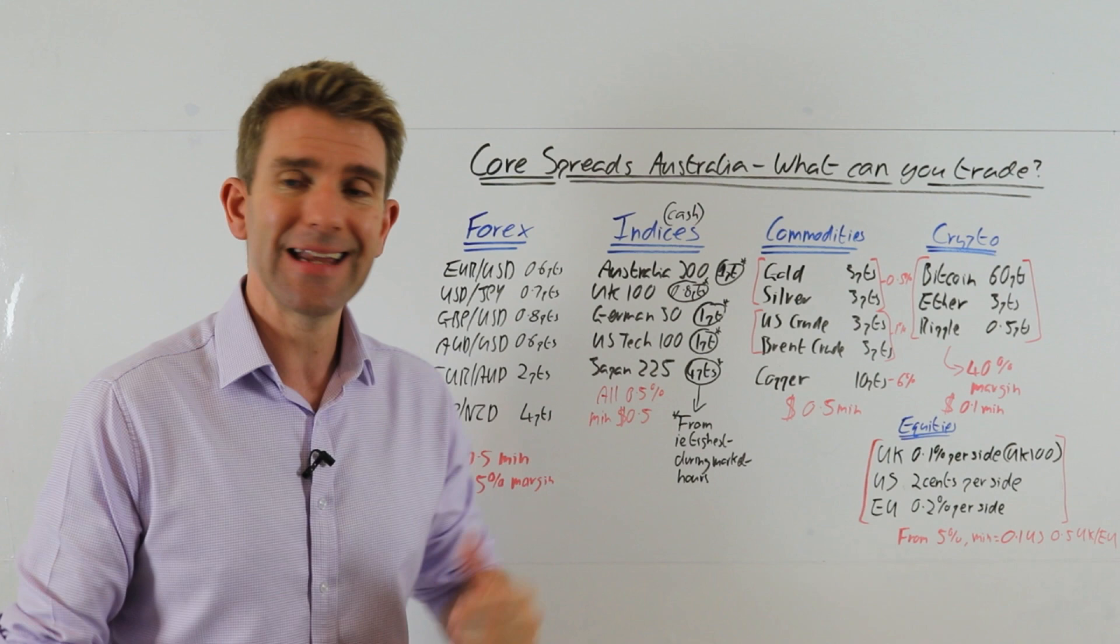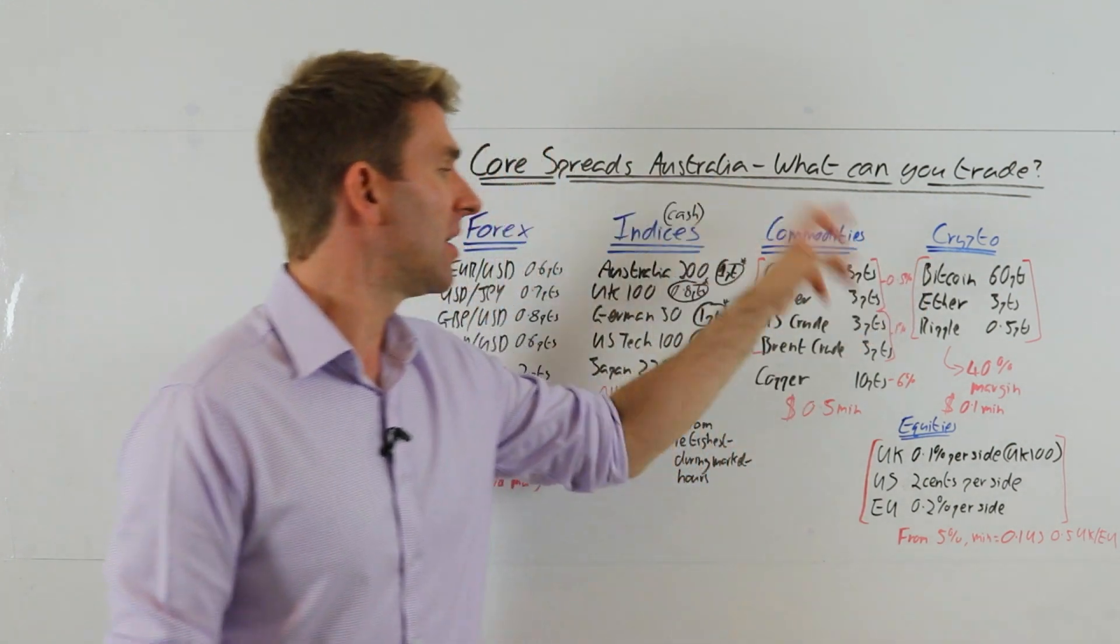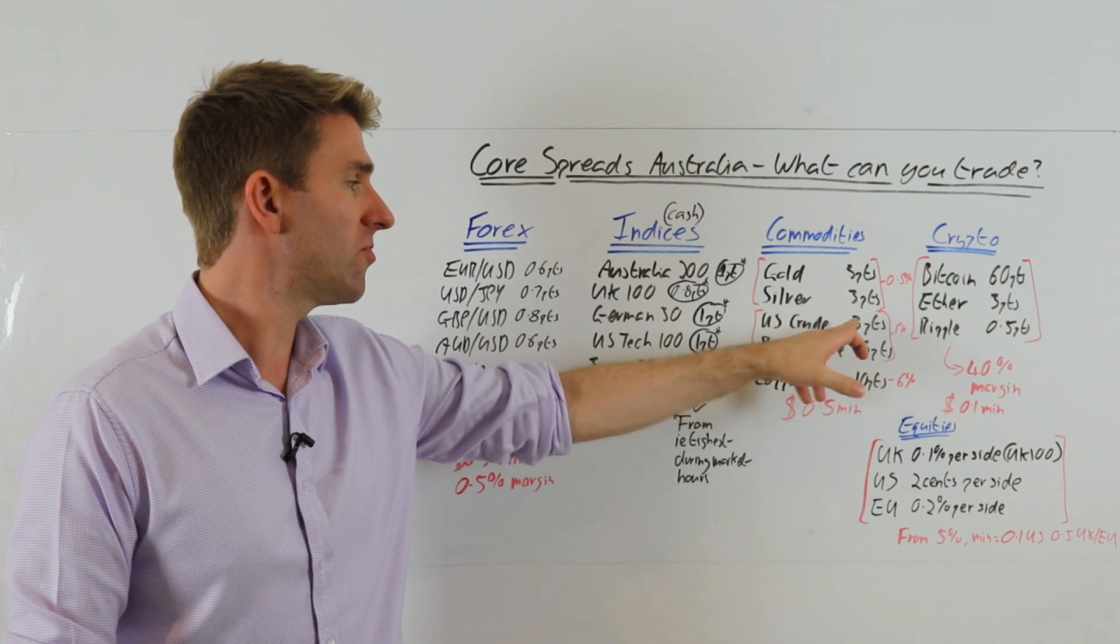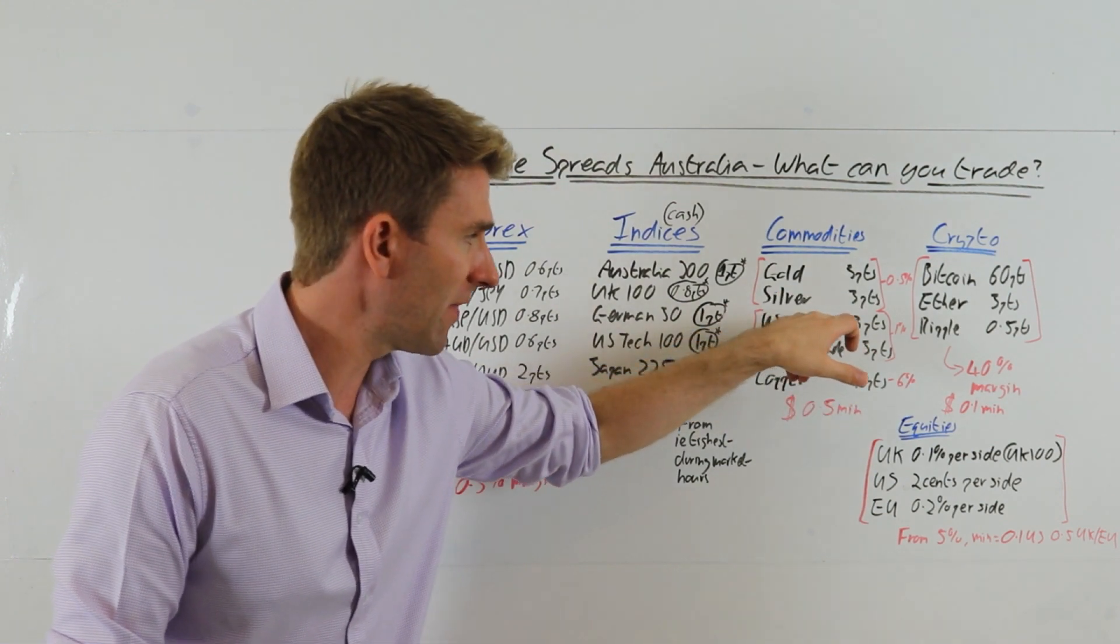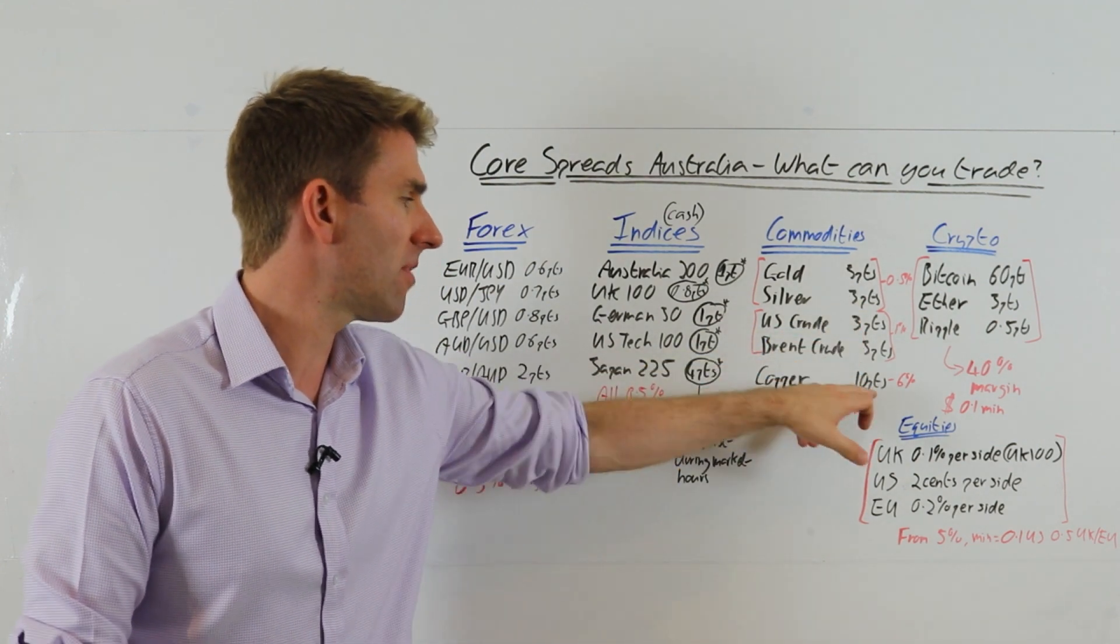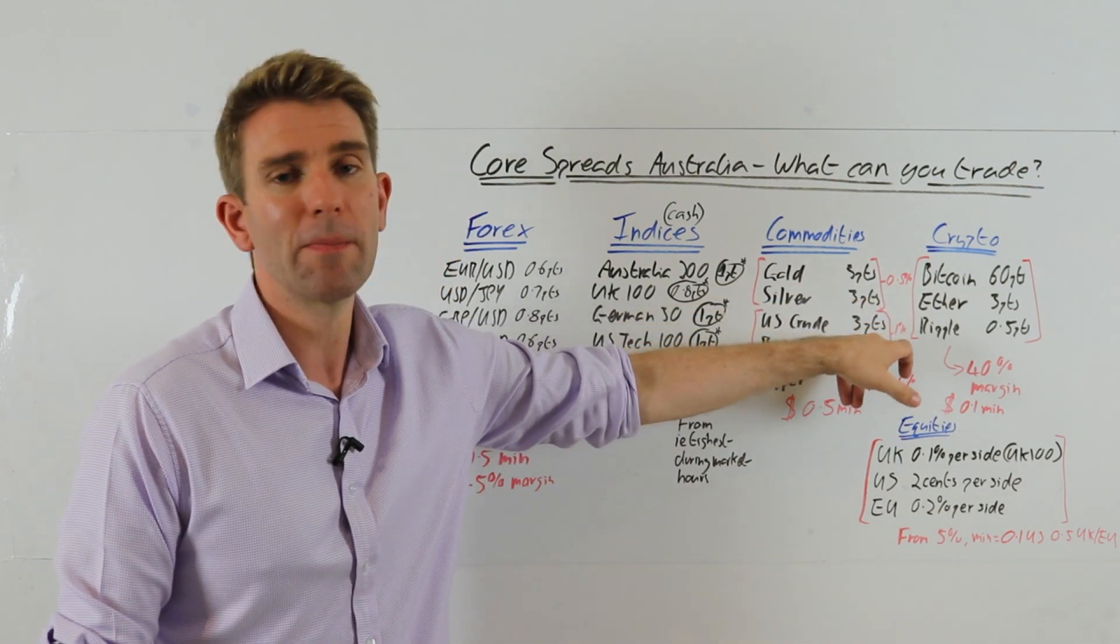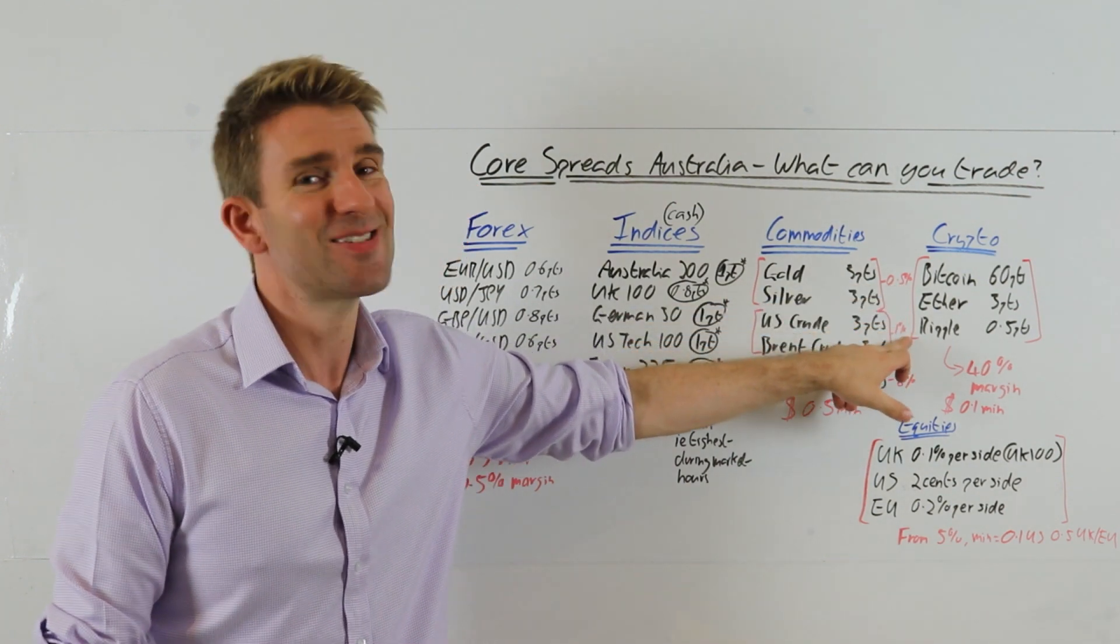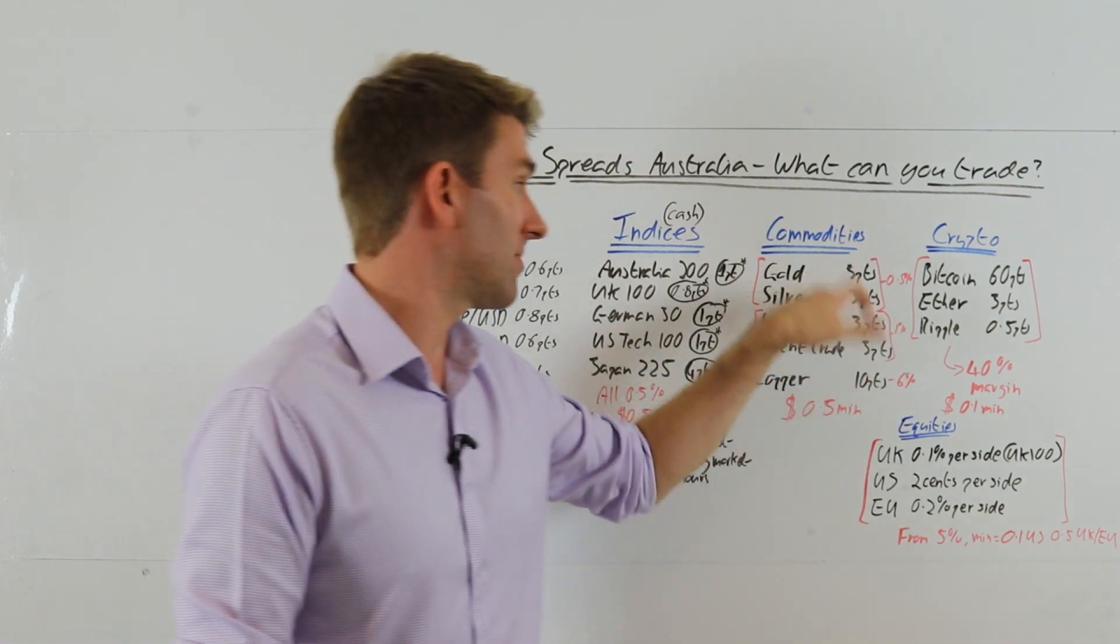Commodities: I've got gold and silver at 3 points apiece. Crude: 3 points. Brent crude is 3 points. That's pretty competitive for crude. Copper: 10 points, it's a big price one. And there's a 6% margin on that. Your margin requirements on gold and silver are half a percent, and crude oil 1%, understandably a little bit more because we know crude oil can swing. And again the minimum, which is handy for some of these swingers, is half a dollar.